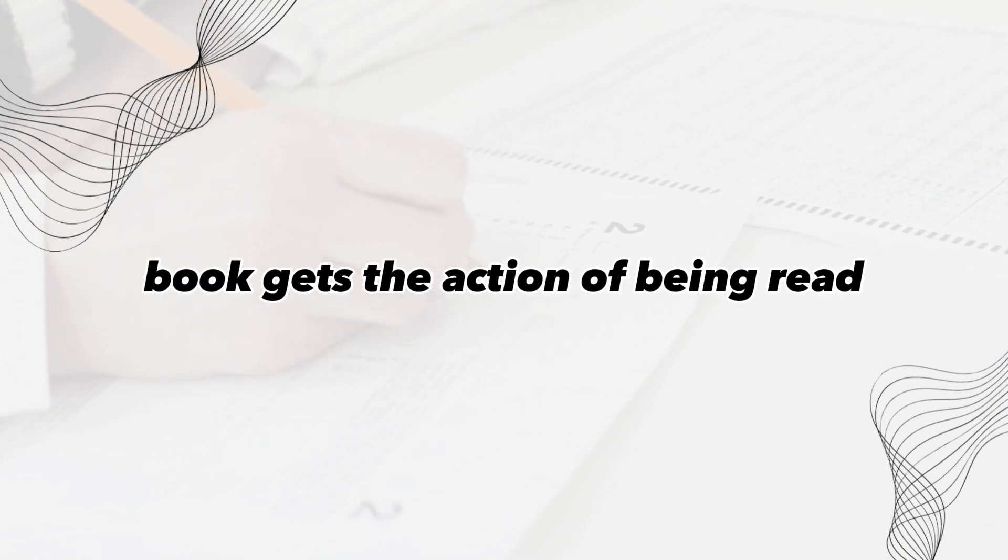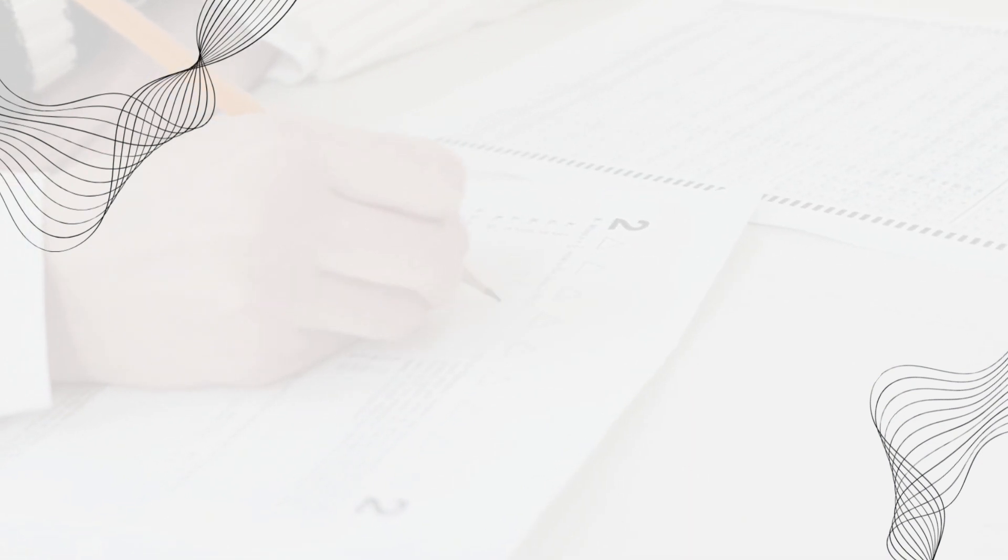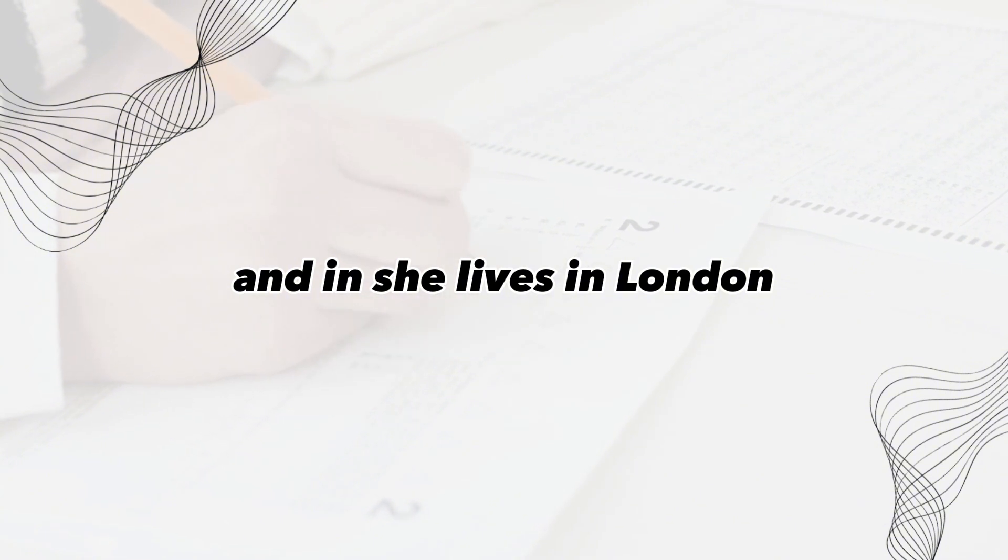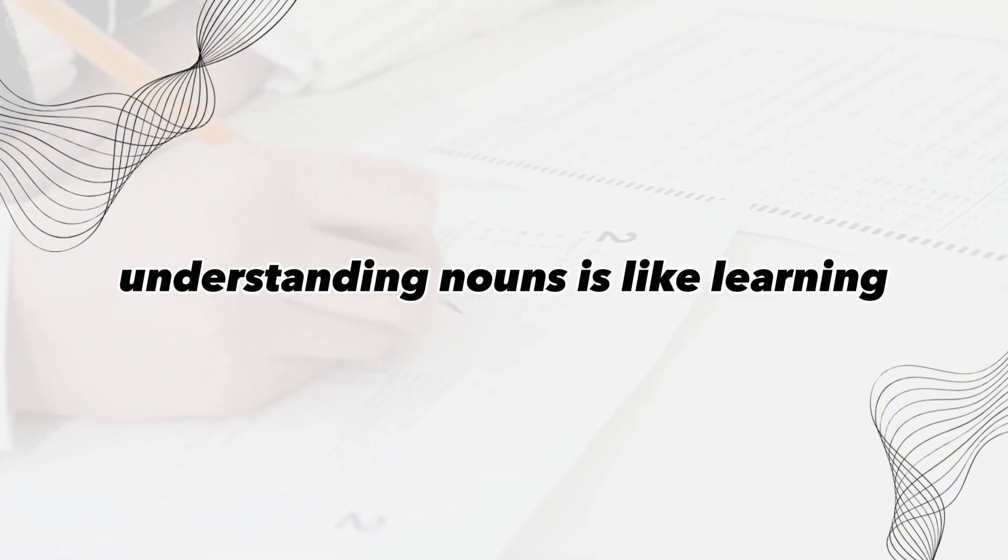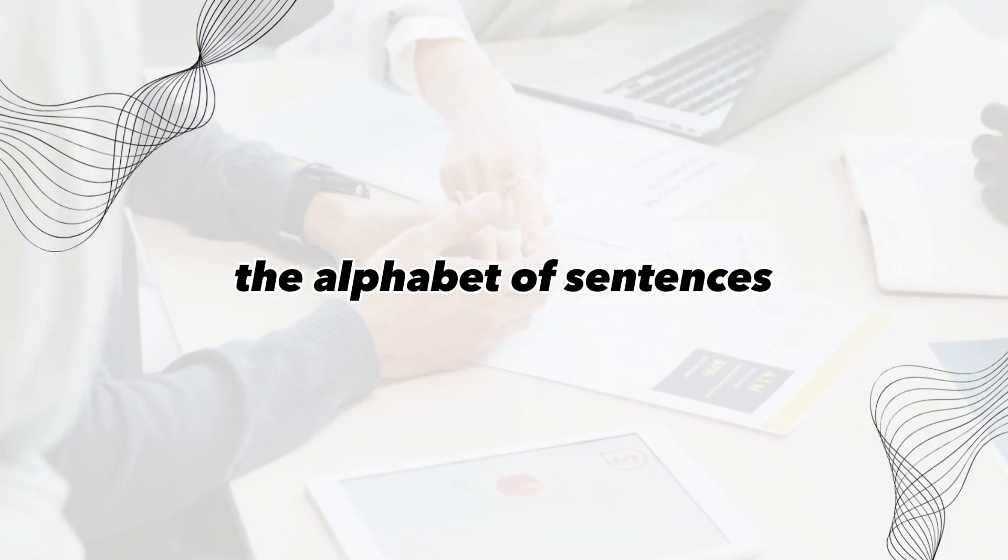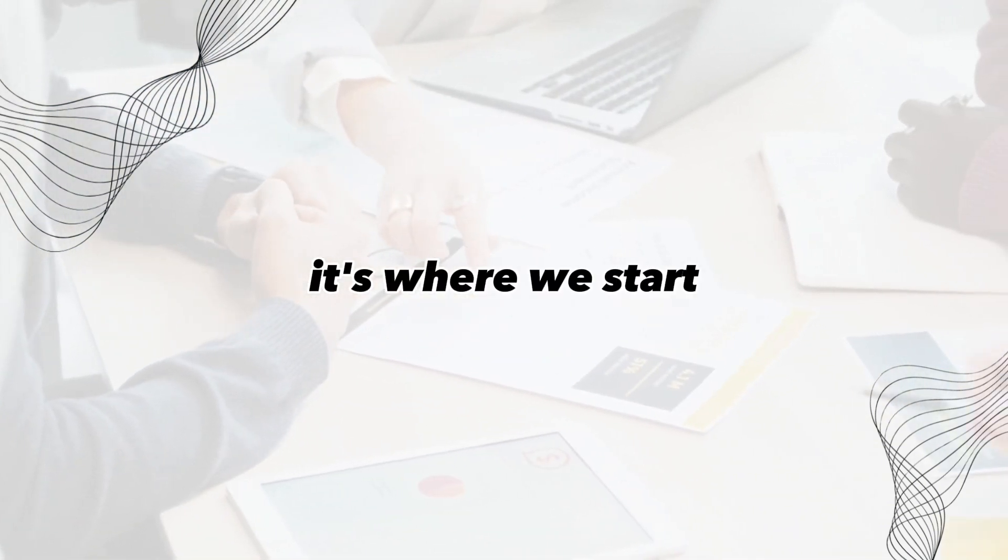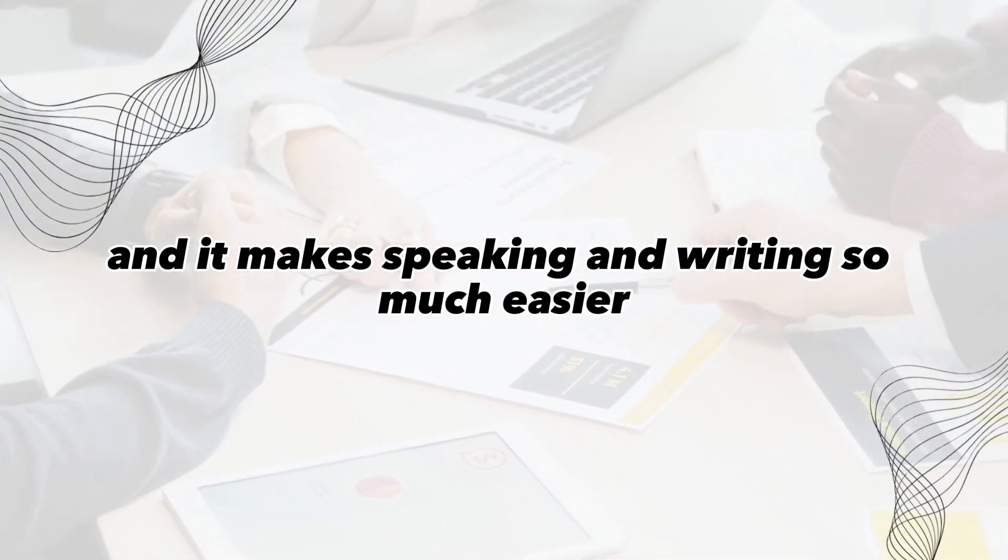In I read a book, book gets the action of being read. And in She lives in London, London is the place where she lives. Understanding nouns is like learning the alphabet of sentences. It's where we start, and it makes speaking and writing so much easier.